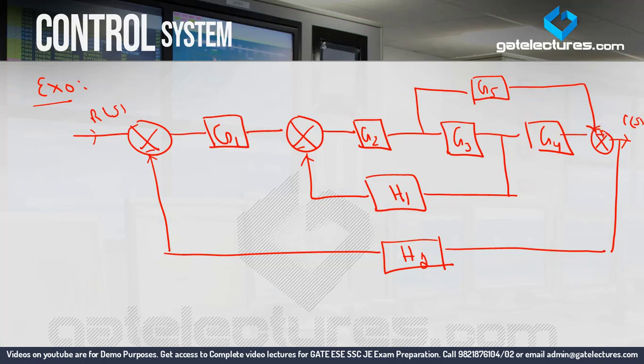So this is a very large block diagram. Now we need to calculate the transfer function C(s)/R(s). The problem is that if you try to calculate the transfer function using block diagram reduction technique, you would need to apply many different rules and solve step by step, making the calculation very complex. Instead, if I convert this block diagram into signal flow graph, I only need to use Mason's gain formula — no other rules are needed.